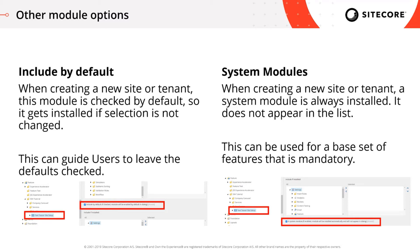One note on Include by Default: be careful about disabling that for standard components or standard modules. For example, if search doesn't need to be on every site and you uncheck it, when you upgrade SXA those changes will be overridden by the default SXA behavior, because the upgrade replaces items in paths controlled by SXA. Anything under a folder indicated with the Experience Accelerator name is controlled by SXA, so changes to those items will be overwritten on the next upgrade.